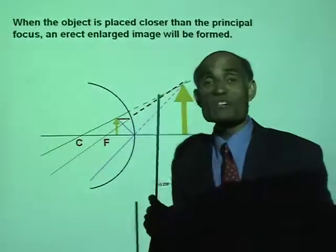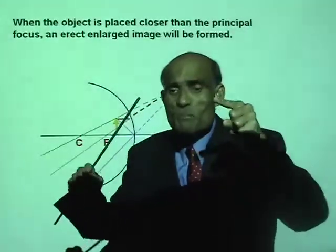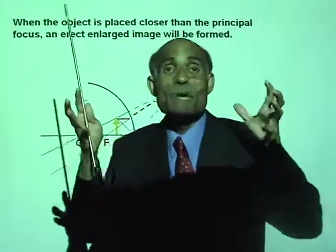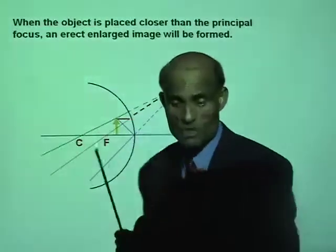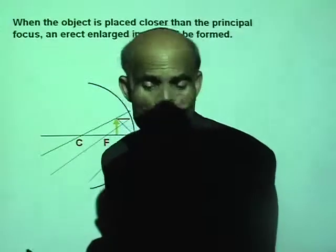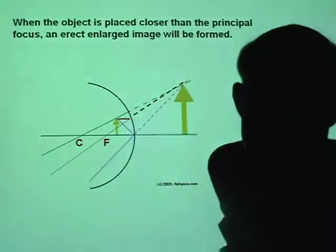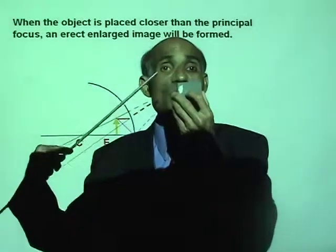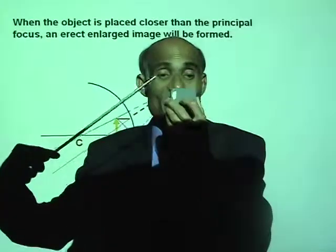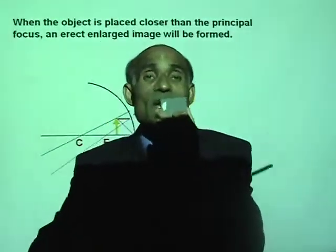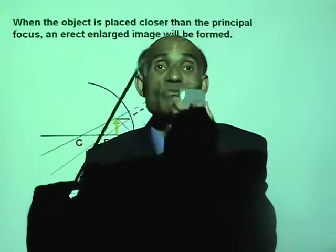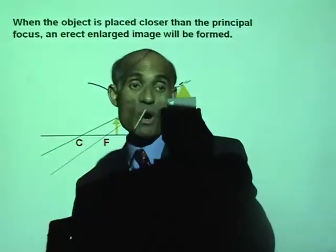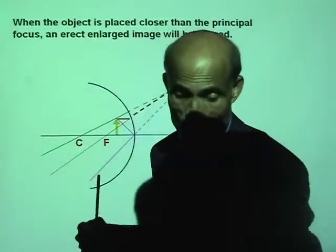The image you see in the mirror in a hotel that helps you to shave better and makes your face look bigger — you've got to keep the mirror close to your face so that your face is the object within the principal focus. Then you will see a bigger image behind the mirror. It is a virtual image because the reflected rays do not meet at that point — they only appear to come from that point.